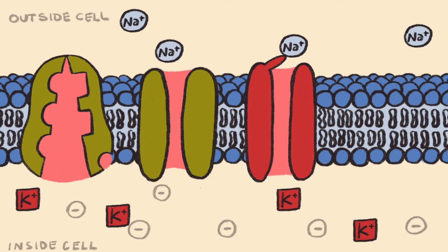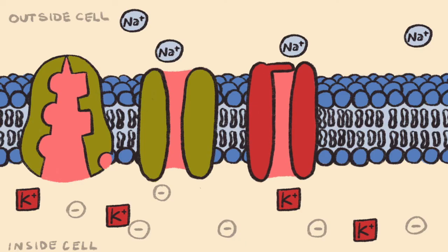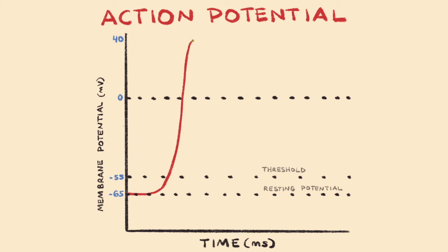As the sodium ions rush into the neuron, the membrane potential passes 0 millivolts. After 0 millivolts, it is considered the overshoot, because it is going well past what originally was a negative charge and starts to approach positive 40 millivolts. At positive 40 millivolts, the voltage-gated sodium channels become inactivated and no longer let sodium ions into the neuron. This is the peak of the action potential.